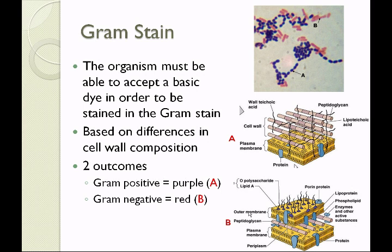There are two outcomes in the Gram stain. A Gram-positive organism, because of its thick layer of peptidoglycan, will retain the purple color. A Gram-negative organism, because it has that outer membrane and very little peptidoglycan, will lose the purple color during the rinse and will retain the red counterstain color.